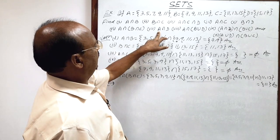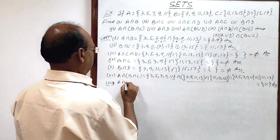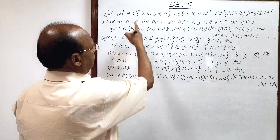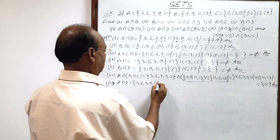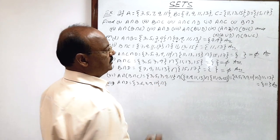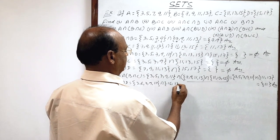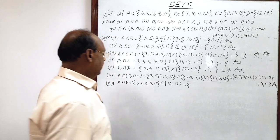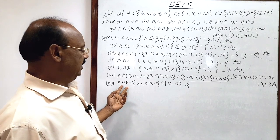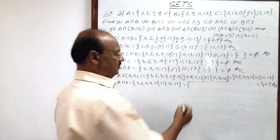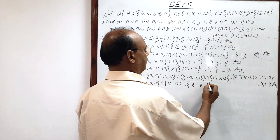Seventh part: A intersection D. Set A has elements 3, 5, 7, 9, 11 and set D has elements 15 and 17. We collect common elements for the intersection. There is no element common in these two sets. So again this is a null set — an empty set denoted by phi (φ). This is the answer.